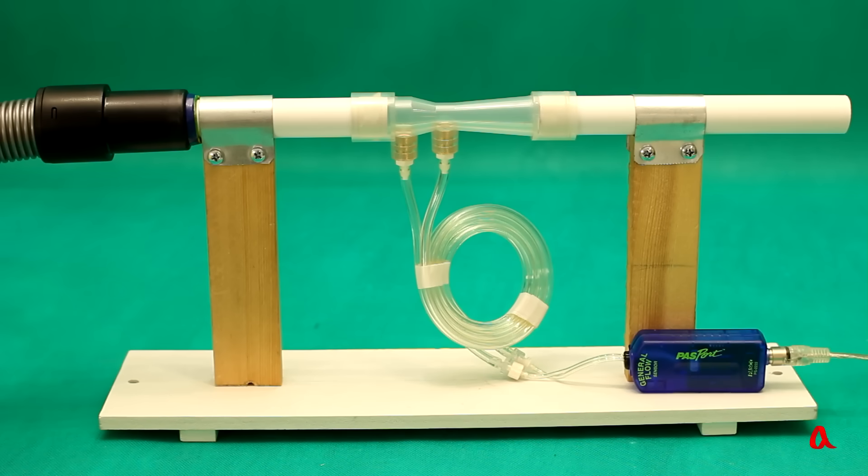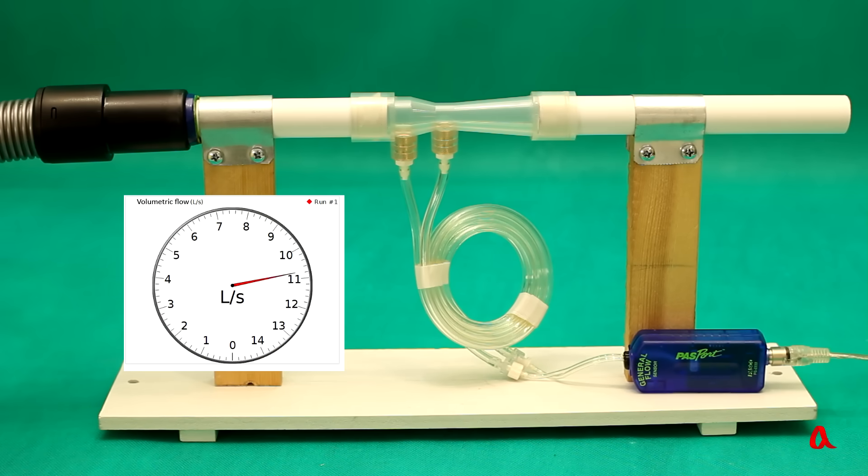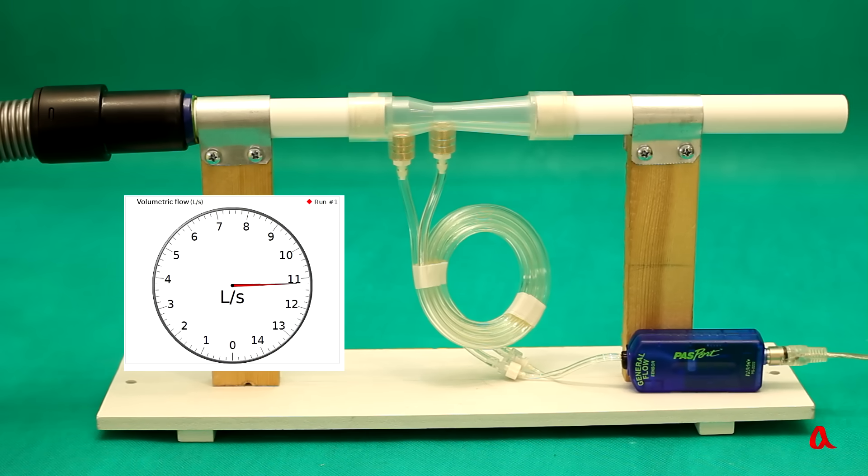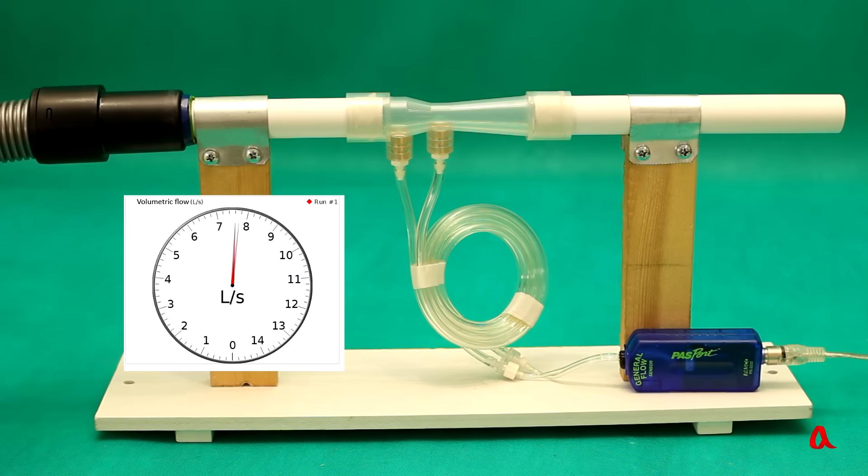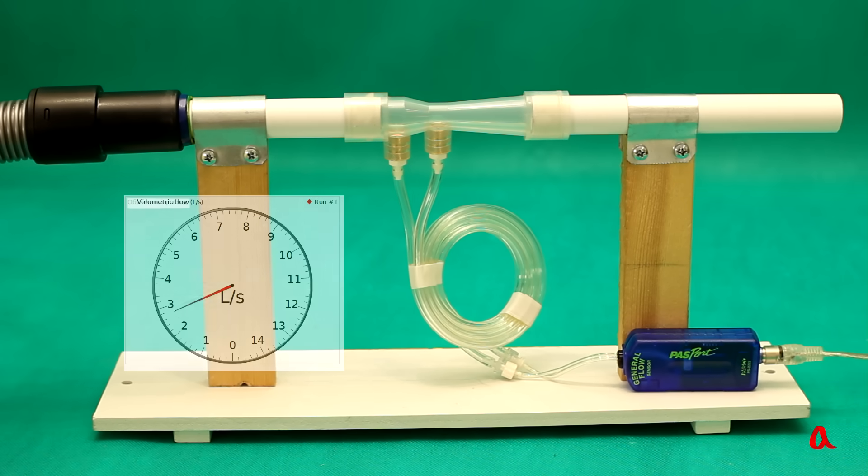Let us switch on the blower. The device shows that 12 liters of air gets through the pipe every second. This means that if the section of the pipe is 3 square centimeters, the speed of air within it is 40 meters per second.